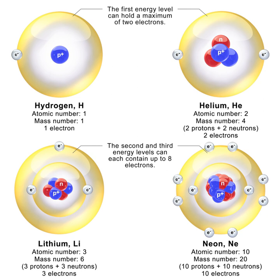Electrons were assumed to reside within the nucleus because it was known that beta radiation consisted of electrons emitted from the nucleus. Rutherford called these uncharged particles neutrons, by the Latin root for neutralis and the Greek suffix on, a suffix used in the names of subatomic particles, i.e. electron and proton. References to the word neutron in connection with the atom can be found in the literature as early as 1899. However, throughout the 1920s, physicists assumed that the atomic nucleus was composed of protons and nuclear electrons, but there were obvious problems.